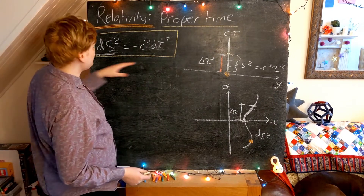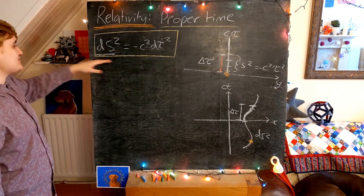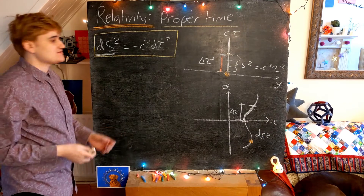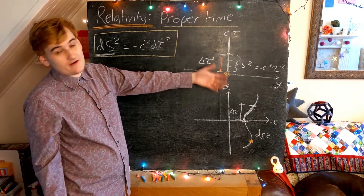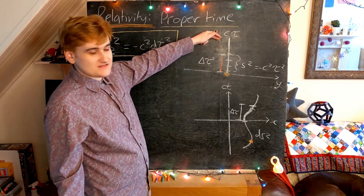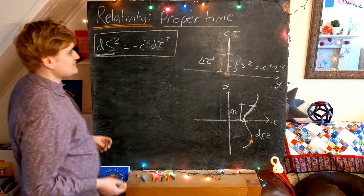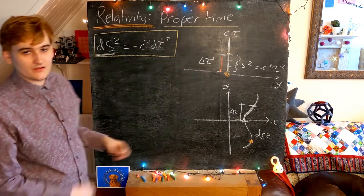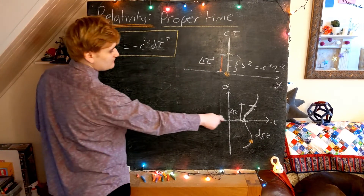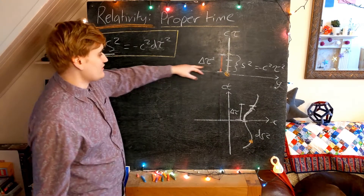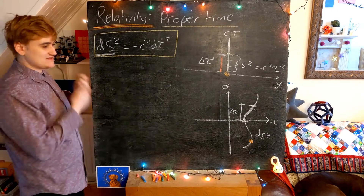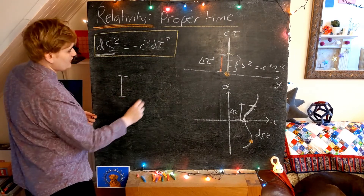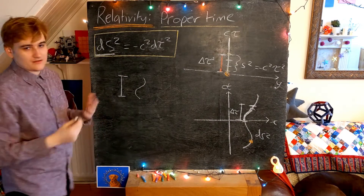To summarise: we can take spacetime distances measured in any frame and realise that they're invariant, so we can measure distances in our own frame and work out how much time has elapsed — we refer to this as the proper time interval. This proper time interval then constrains for all other observers how this world line is going to appear, because the spacetime length of that world line has been set, and it's just up to each reference frame to distribute that fixed length over some amount of space and time coordinates.